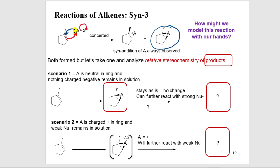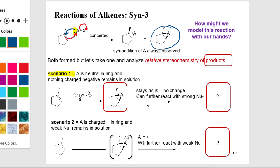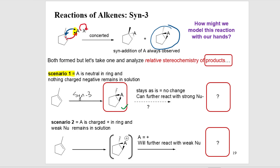Starting from the alkene in scenario one, we may do a reaction using a SYN3 mechanism and we might end up with a product that is neutral. And it stays like that. You can choose to keep it that way — that was actually what I wanted to make. Done with the reaction. Let's isolate that, purify it and take an NMR. So that's possible. That could be one of your products.